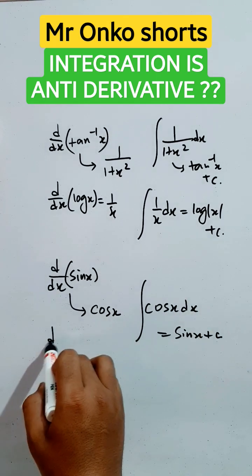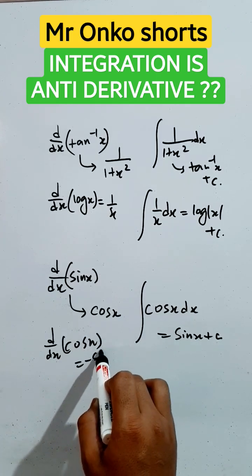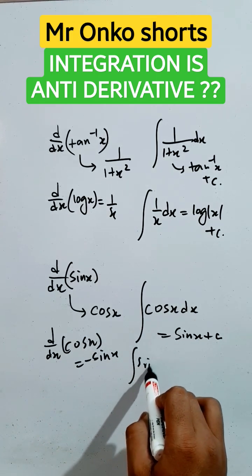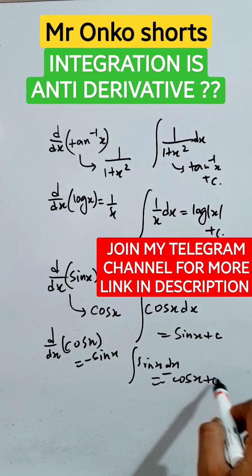Now, if derivative of cos x is derived, it will be minus sin x. Now, the integration of sin x will be minus cos x plus c. Thus, you can find.